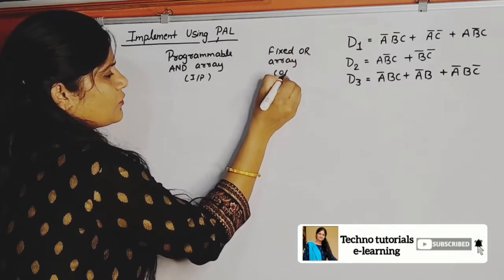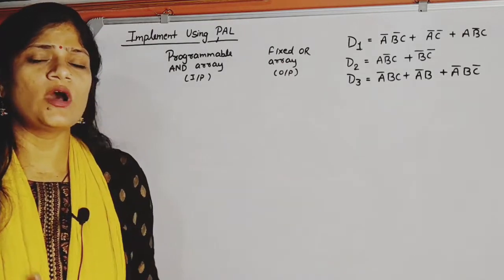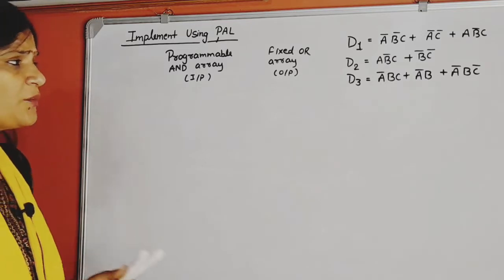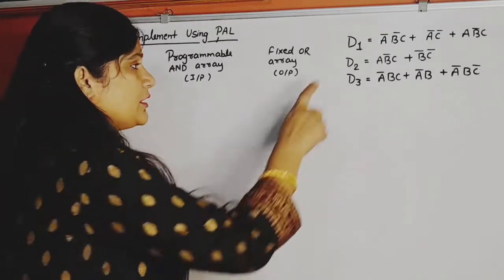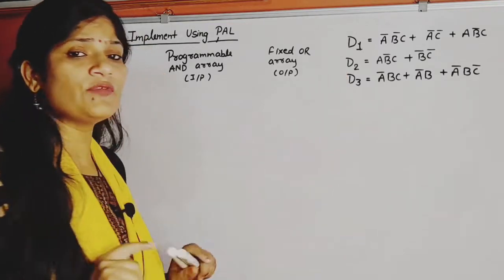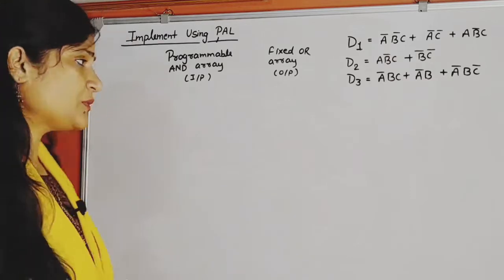Correct, okay. Here in this implementation, we have three functions D1, D2, D3. The number of variables are A, B, C. So A, B, C means these functions are of three variables.